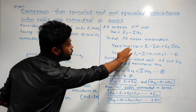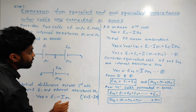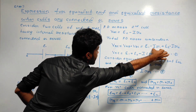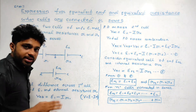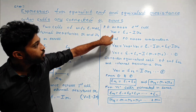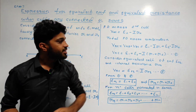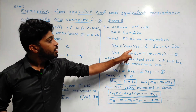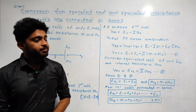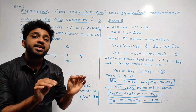VAB is E1 minus IR1. Now for the second cell, VBC is E2 minus IR2. So VAC equals VAB plus VBC, which gives us E1 minus IR1 plus E2 minus IR2. We rearrange the equation.